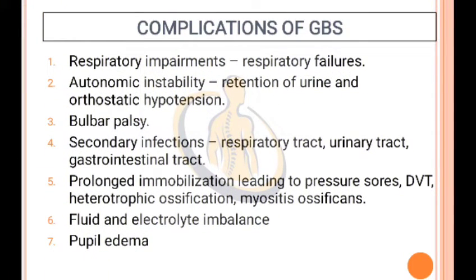Complications of GBS: Respiratory impairment leading to respiratory failure; autonomic instability including urinary retention and orthostatic hypotension; bulbar palsy; secondary infections such as respiratory tract, urinary tract, and gastrointestinal tract infections; prolonged immobilization leading to pressure sores, DVT, heterotopic ossification, and myositis ossificans; fluid and electrolyte imbalance; papilledema.